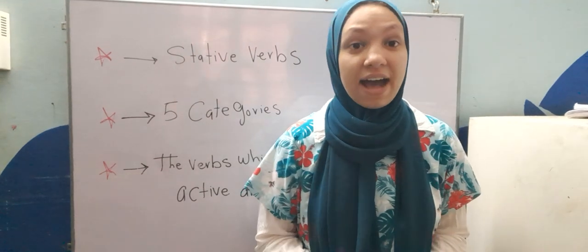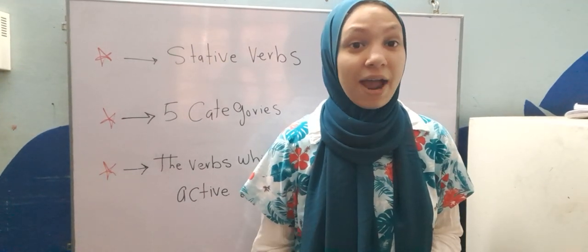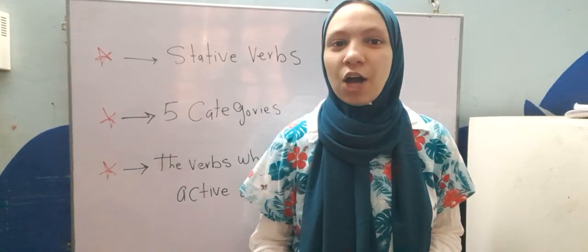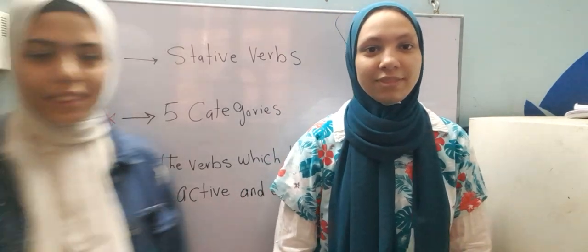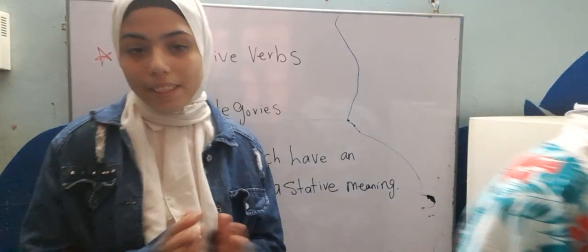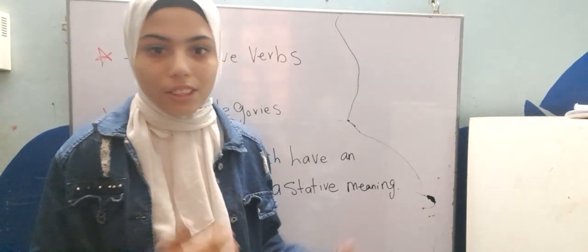Some verbs in English have static meaning. They describe states, conditions, or situations. When they have static meaning, they don't come with progressive tenses. As an example, we can say, yum, the food tastes great. Here I describe the food that it tastes great.